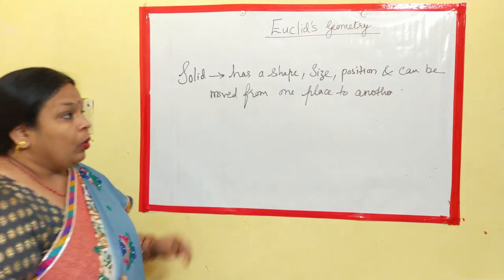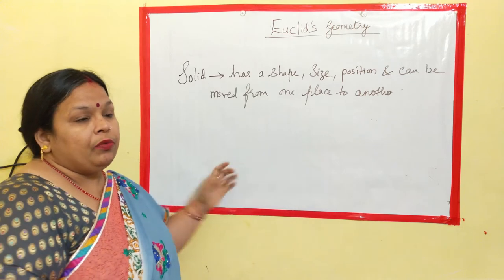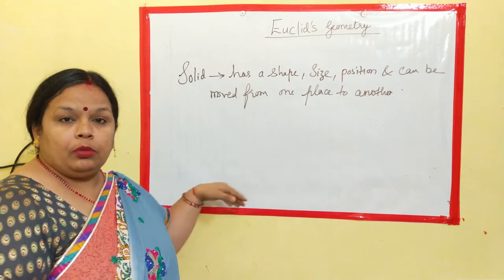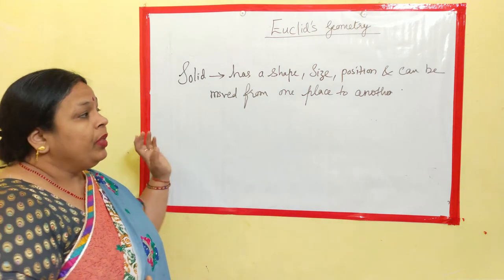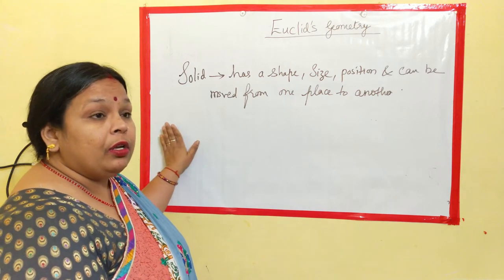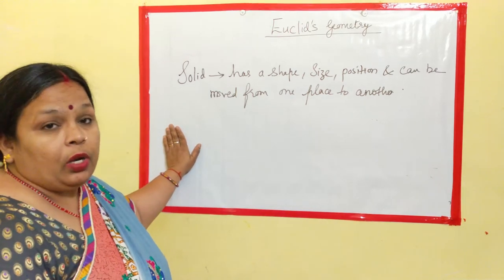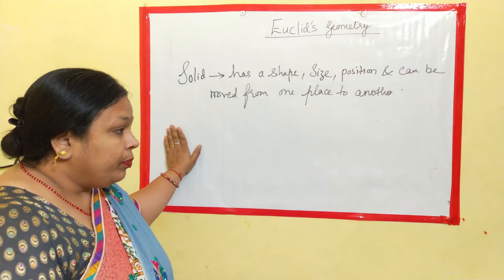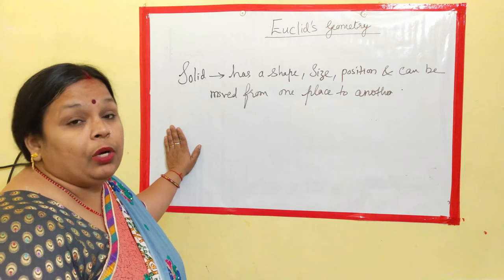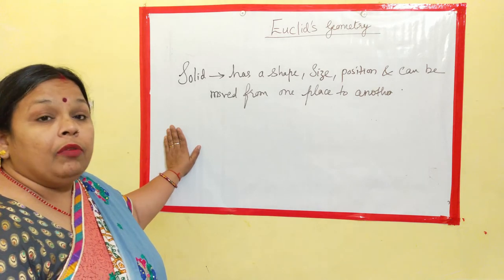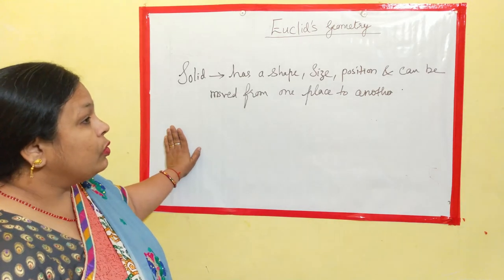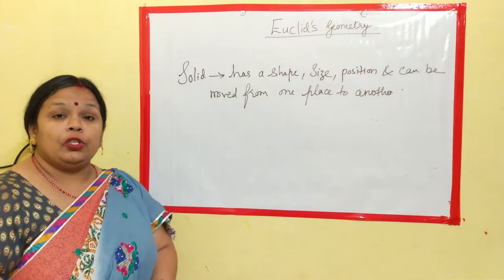How to find the boundaries? We have a formula that we need to add all the boundaries and we will get the perimeter. And for area, the region enclosed inside the boundary is called area. So there were a few more points regarding which we accepted without any definitions and without any proof, and those were called as postulates. So the first thing derived was solid.